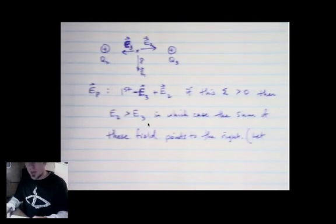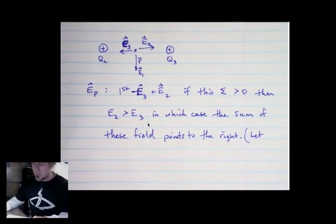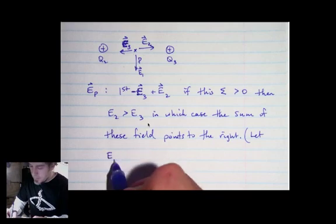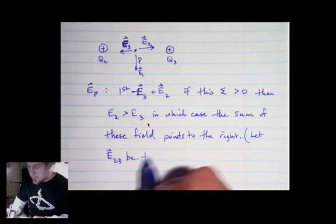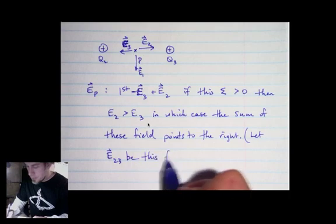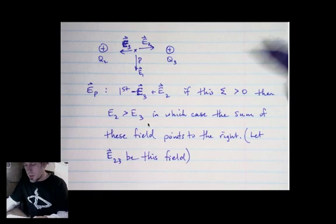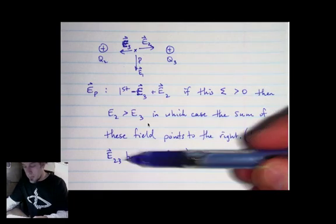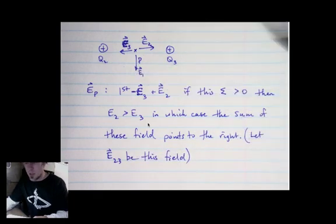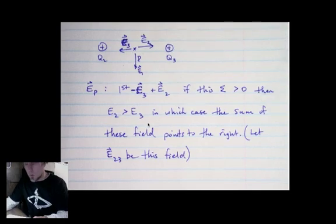We're going to let e2,3 be this field. Now we have this field sum e2,3, and we now have to add that to e1. In order to do that, we need to know the angle between those two fields.